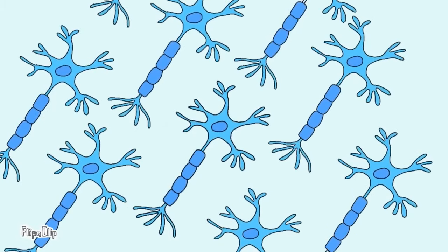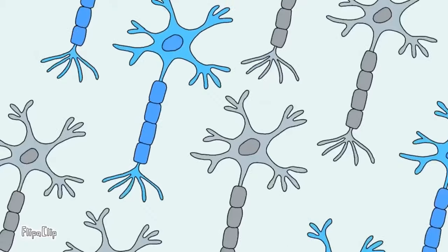It's these neurons that degrade, preventing signals from getting to the muscles and causing paralysis.